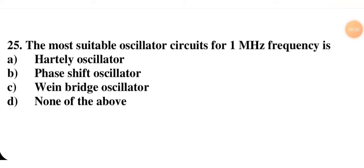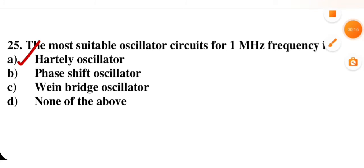The most suitable oscillator circuit for 1 MHz frequency: since 1 MHz is in the high frequency range, and the high-frequency oscillator is the Hartley oscillator, option A — Hartley oscillator — is the right option.